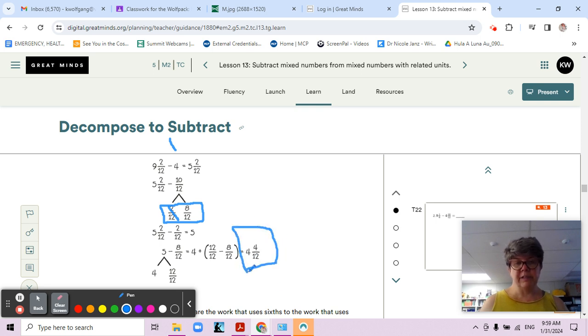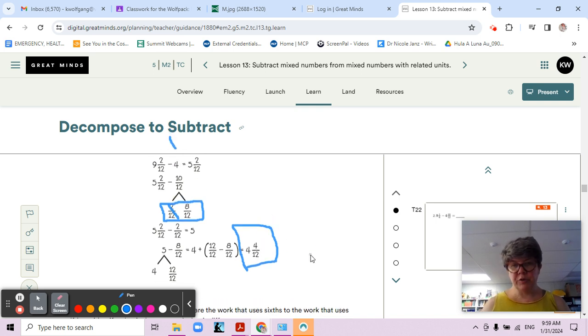Twelve twelfths minus eight twelfths equals four twelfths, that leaves me with four and four twelfths - still the same answer. Four and two sixths, four and four twelfths - it's the same number, just a different multiple. So we're just looking at different ways to subtract, and you're practicing some different ways.